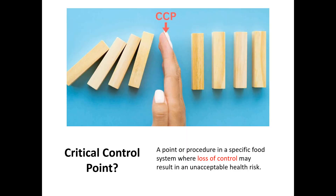Another way of looking at it is: it's a point or procedure in a food system where loss of control may result in unacceptable health risk. So if we look at this graphic to the right, we have our control system where the food was cooked correctly and the chicken was held at the correct temperature — it's under control. But if there's a problem there, it all falls apart. To the left we have contaminated chicken. So a CCP is where you must have control, because if you lose control there, the whole food safety system will fall down.